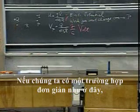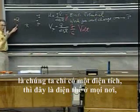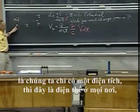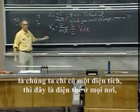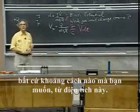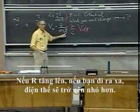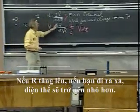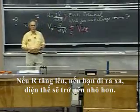If we have a very simple situation like we have here, that we only have one charge, then this is the potential anywhere, any distance you want from this charge. If R goes up, if you're further away, the potential will become lower.